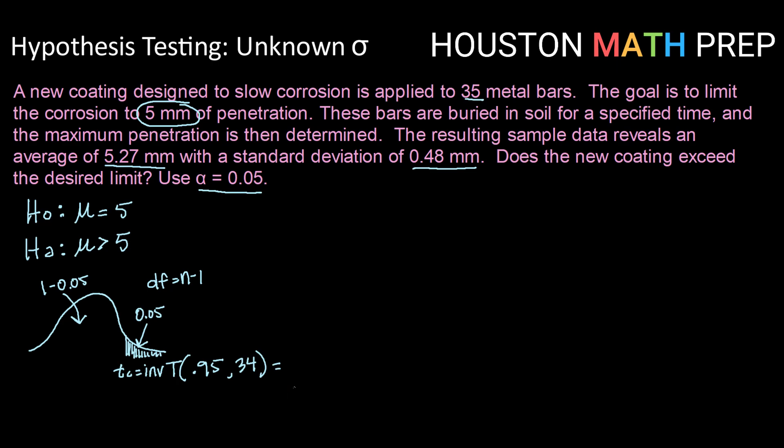So that value gives me 1.691. So my t-critical value or my boundary t value for my rejection region is 1.691.